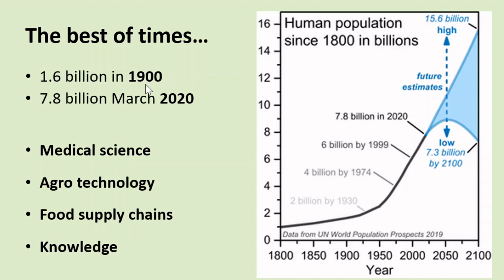As early as 1900, there were only 1.6 billion people living on this planet. Today, within 120 years, it is 7.8 billion — a totally different scene compared to a century ago. Medical science has improved so vastly; agro technology has improved vastly. Food supply chains now bring food from so many different countries, and our scientific knowledge about survival has brought us to a stage when we are living in the best of times in that limited manner.